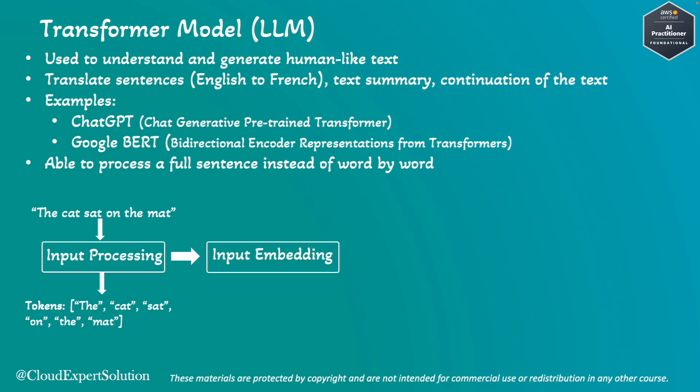The next step is input embedding. Each token will be converted into a numerical representation or vector that captures its meaning. For example, 'cat' might become 0.1 and 0.2 — these are just numerical representations if we want to represent them in a two-dimensional graph. However, the actual input embedding will be multidimensional. I am explaining with the help of a simple example.